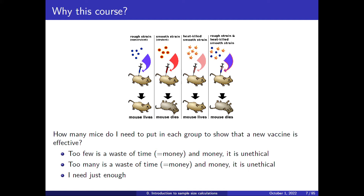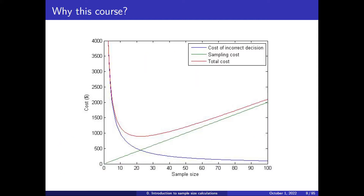You just need enough. There are two implied costs in an experiment. One is linear with sample size: you have to maintain the animals, feed them, give them the vaccine, and measure. All of that grows linearly with sample size — the more animals you have, the more costly the experiment.